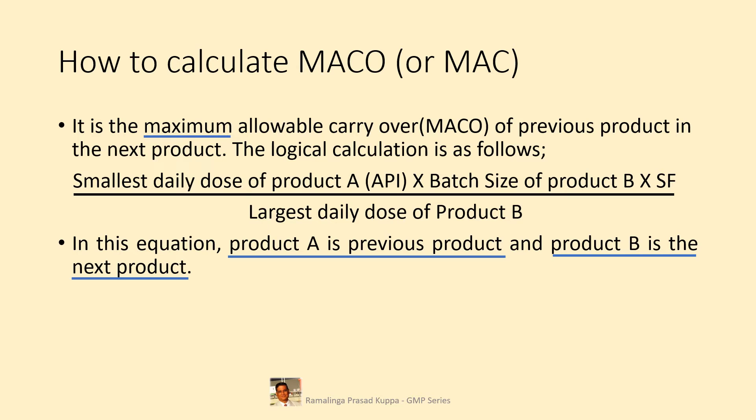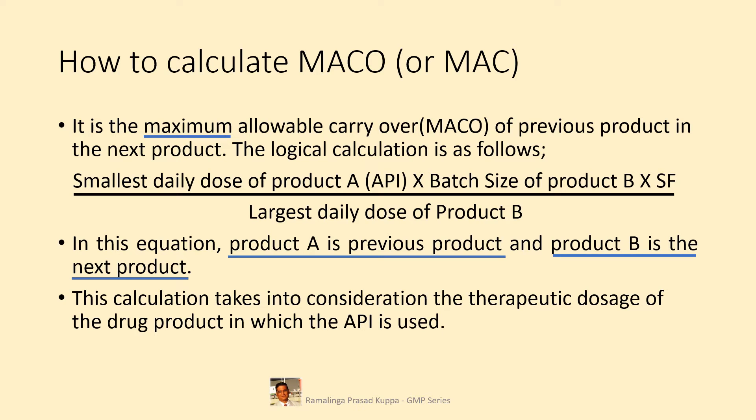Usually, 1/1000 part of the standard therapeutic dose is considered as safe. The calculation is also done using the standard therapeutic dose and minimum batch size for the next batch. The example will look like: standard therapeutic dose of the previous product multiplied by minimum batch size of the next product, divided by the standard therapeutic dose of the next product, further divided by the safety factor — generally 1000. This calculation takes into consideration the therapeutic dosage of the drug product, and is relevant for addressing the cleaning validation of APIs.